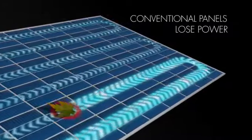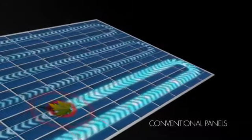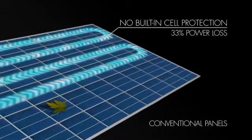When a conventional panel is shaded, it does not allow electricity to pass. Even if there is only one cell being shaded, the panel loses a third of its energy output.